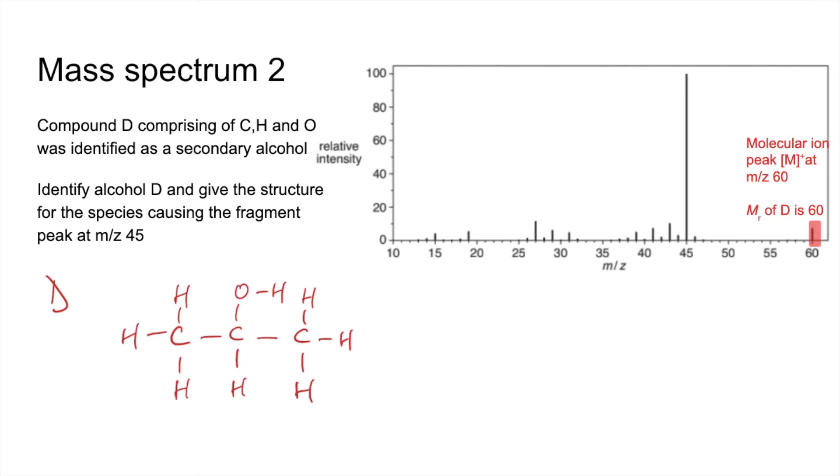Now we've got the structure. We're going to look at the fragment peak, what's caused this. And again, the difference between this one here and this one here is 15. So we've basically lost one of these methyl groups off the end. Fragment peak at m/z 45 formed by the loss of CH3 group, and so therefore that's due to CH3CHOH, but don't forget the plus sign.